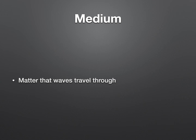Another key term we'll talk about a lot is the word medium. Medium is matter that waves travel through, and this is any type of matter. You've been learning about matter since kindergarten — solids, liquids, gases. Those aren't the only states of matter, but those are all pieces of matter: the table is matter, water is matter, air is matter. There are also states of matter like plasma, like the sun — that's matter. But we'll talk more about that as we go.